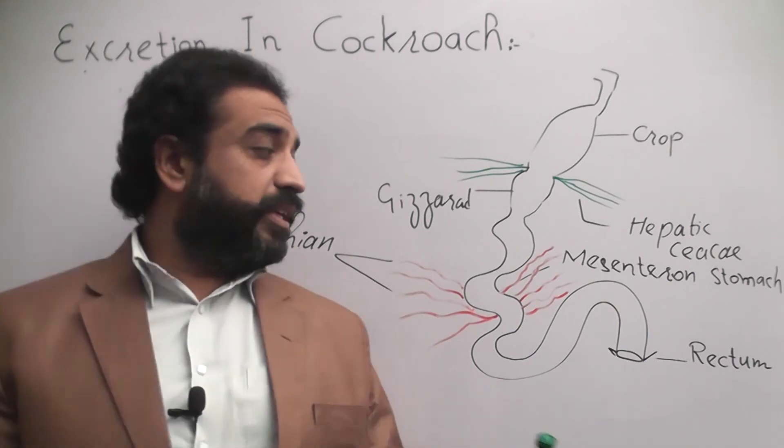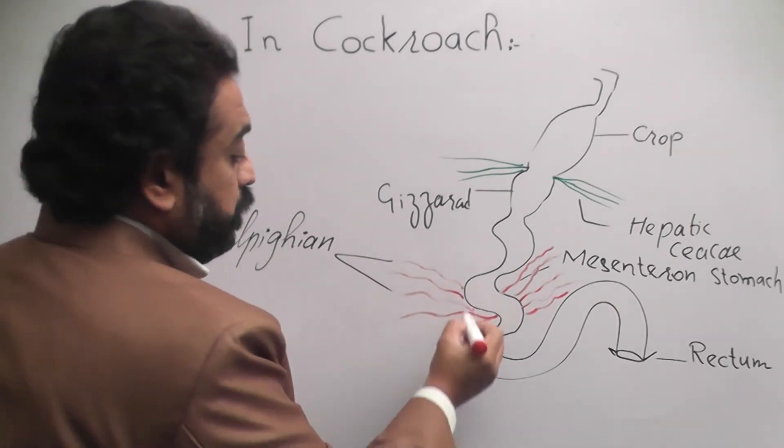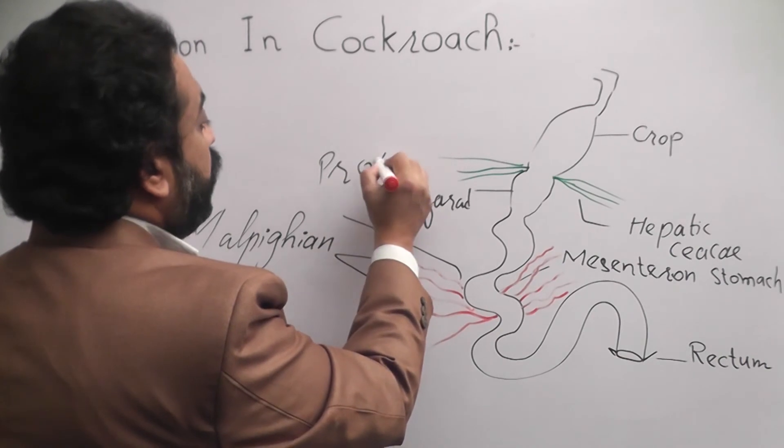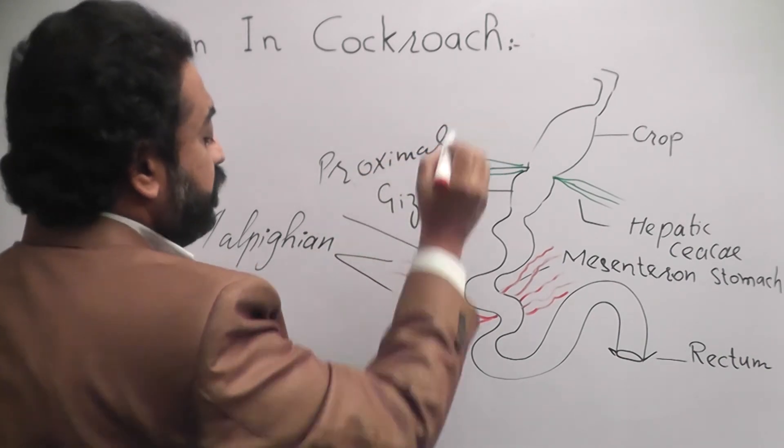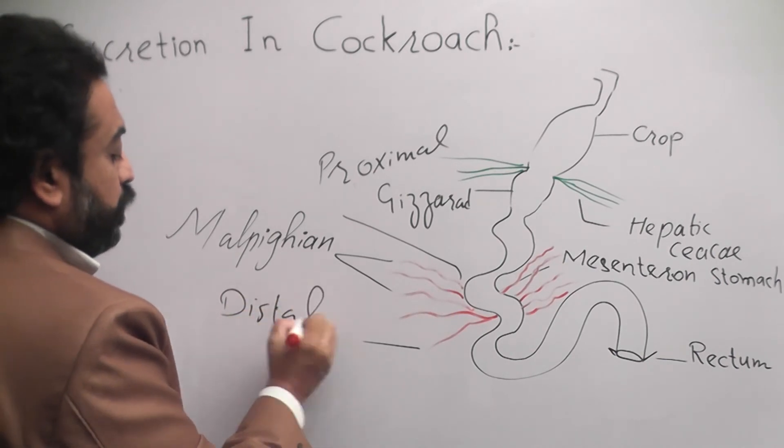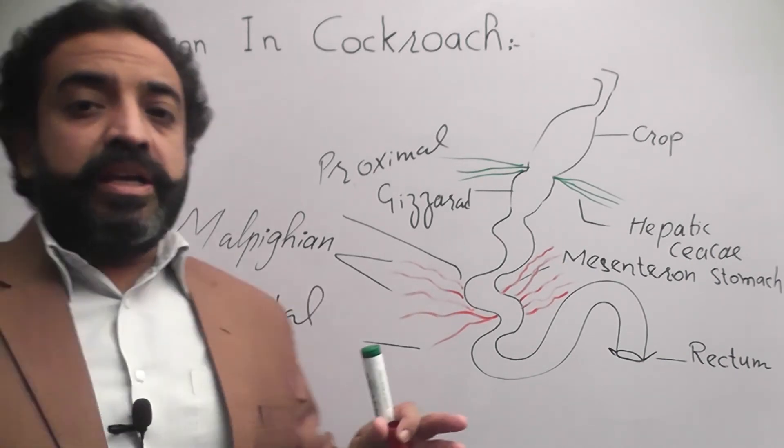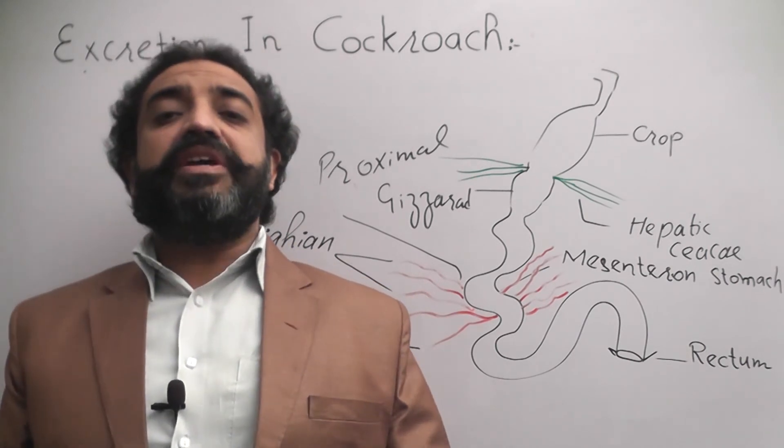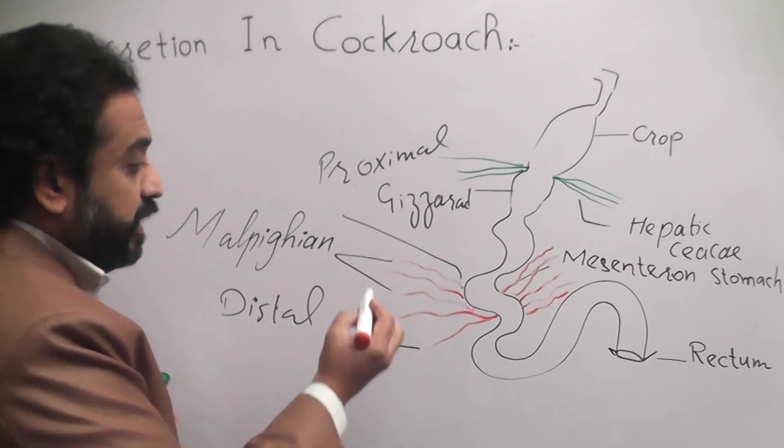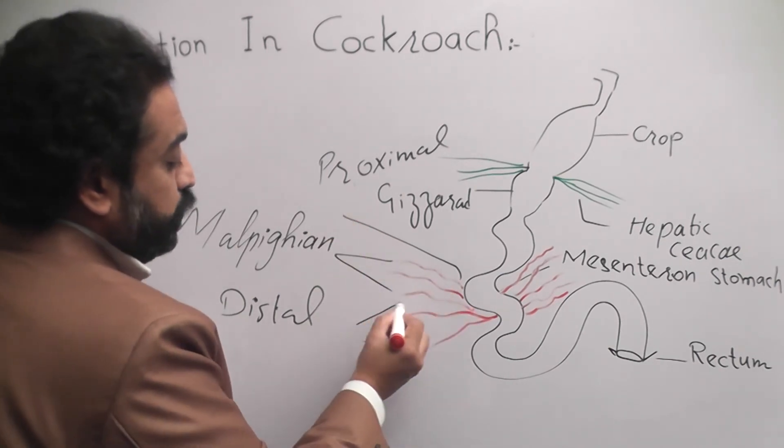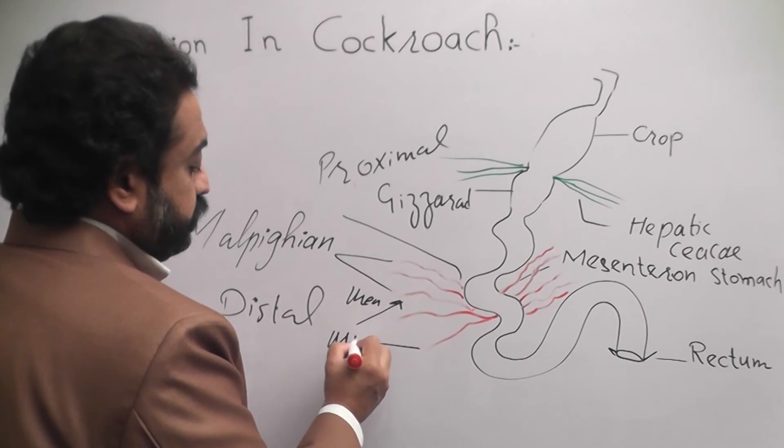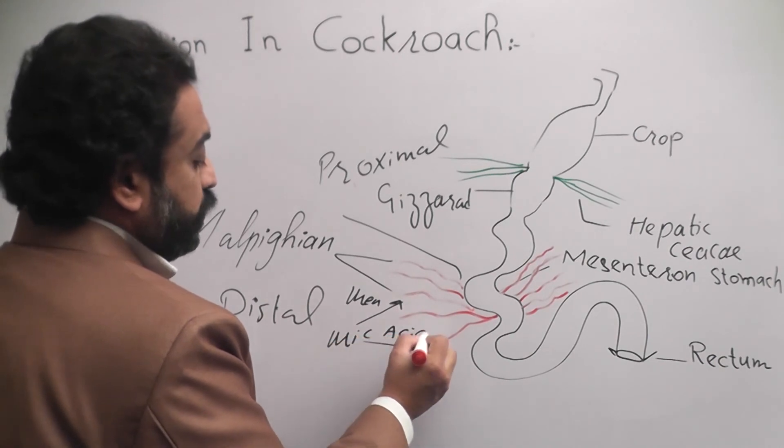What are these? This is proximal and distal. This is proximal to the digestive tract. This is distal. This is immersed in the hemoseal. Uric acid especially and the nitrogenous waste.